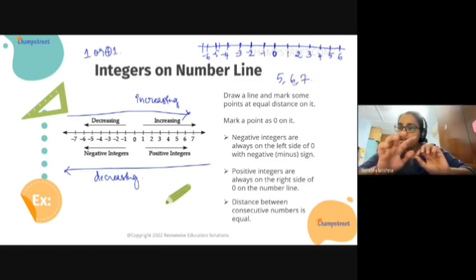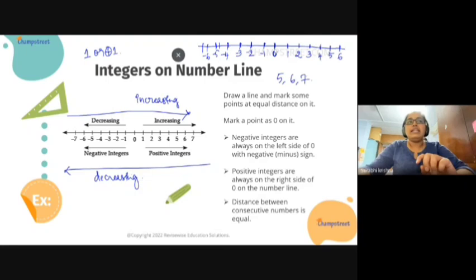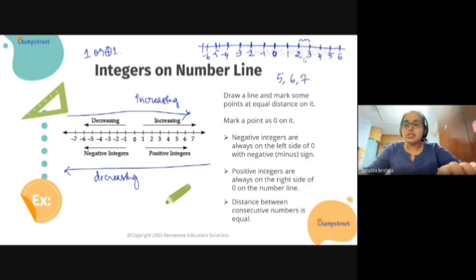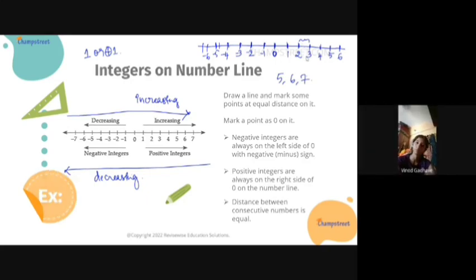Agree? You understood what consecutive numbers are? Distance between consecutive numbers is equal. We are marking these intervals, right? So the distance between these two is equal. Okay. Yes ma'am, I got it. You got it? Any doubts? No.